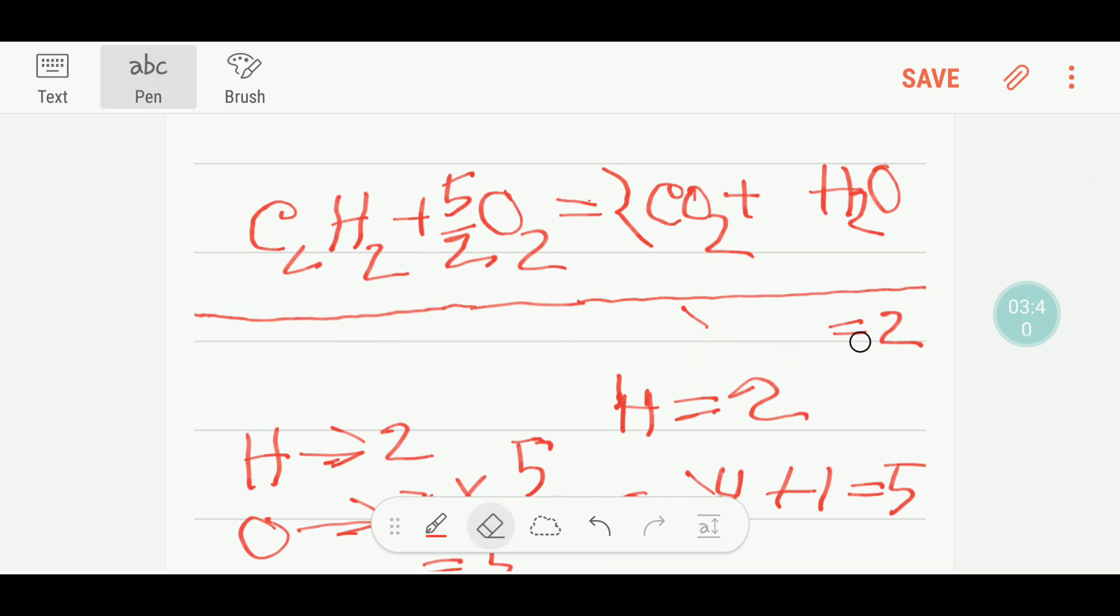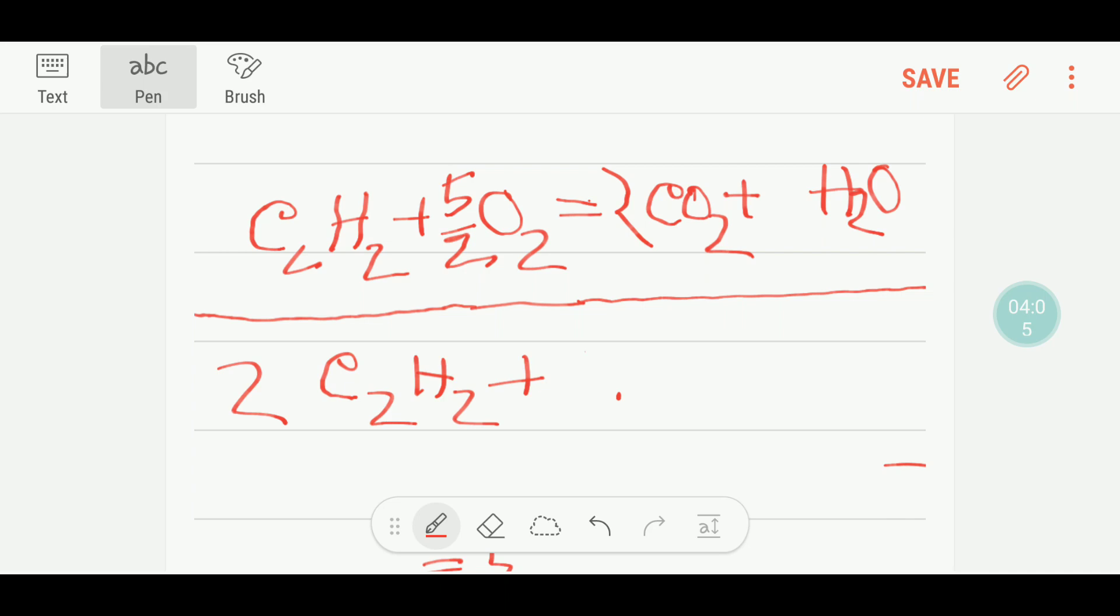If you want to make this fraction to whole number, then you can multiply here by two. Then this two, this two will cancel out, and you will get only five. So let me write by multiplying whole equation by two. C2H2 plus five oxygen equal to four carbon dioxide plus two molecule water. So this is the balance equation of the whole number.